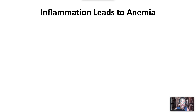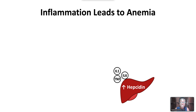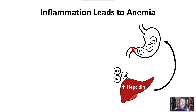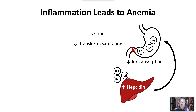In anemia of inflammation, increased inflammatory cytokines lead to increased hepcidin production. Hepcidin causes internalization and proteolysis of ferroportin in enterocytes and macrophages, leading to decreased iron absorption from the gut and decreased transfer into the reticuloendothelial system. Therefore, there are low circulating iron levels, low transferrin saturation, low total iron binding capacity, and high concentrations of ferritin.